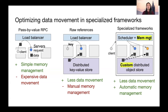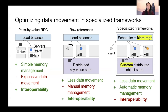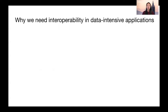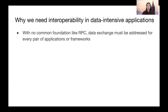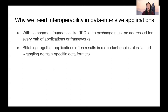However, frameworks are also generally limited to a specific domain. Interoperability between frameworks is harder than with pure RPC because of the use of higher-level APIs, and this will only get worse as frameworks diversify. For RPC, stitching together two applications is as simple as importing an interface. But data-intensive applications don't have a common foundation like RPC, so data exchange is a problem that has to be addressed for every pair of applications. What ends up happening today is that developers have to deal with redundant copies of the data and a lot of wrangling between different higher-level formats.